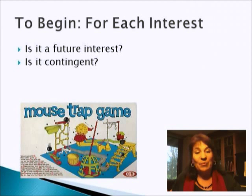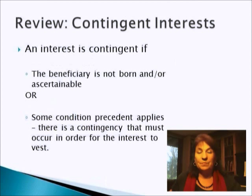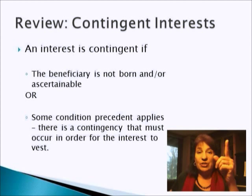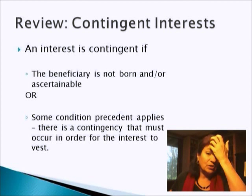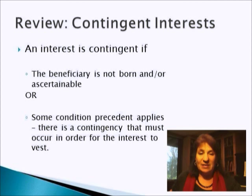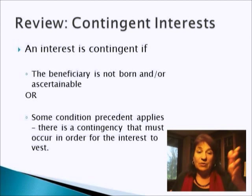Are there things that have to happen before the interest will vest? Just like in the old mousetrap game, there were things that had to happen in order for that cage to land on the mouse. Now, when is an interest contingent? It's contingent if the beneficiary is not born, or the beneficiary is not ascertainable, or there's some condition precedent. Make a distinction here: we're talking about a condition that has to occur in order for the interest to vest, not an interest subsequent that will come in to divest.